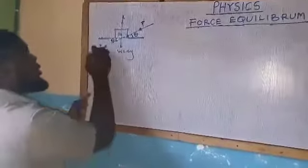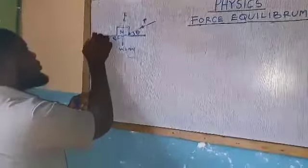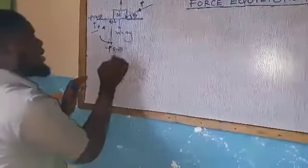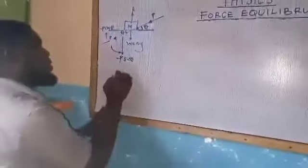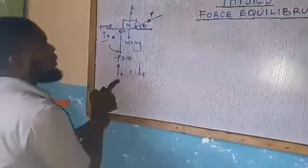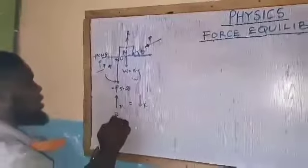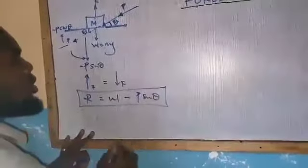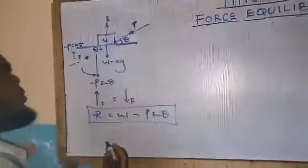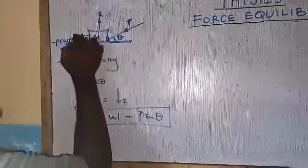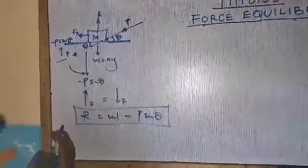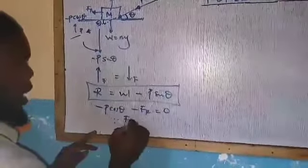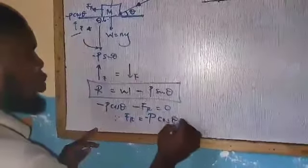At that point, I resolve the force. Resolving along the horizontal axis: since theta is closing, it gives minus P cos θ. Resolving along the vertical axis: since it is along the negative y-direction, it gives minus P sin θ. For equilibrium, upward force equals downward forces: R equals W plus P sin θ. For the horizontal: minus P cos θ minus FR equals zero, so FR equals P cos θ.